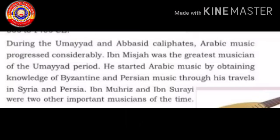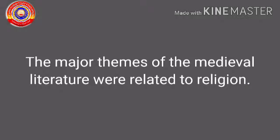Ibn Misda was the greatest musician of the Umayyad period. He started Arabic music by obtaining the knowledge of Byzantine and Persian music through his travels in Syria and Persia. Ibn Muhris and Ibn Sulay were two other important musicians of that time.